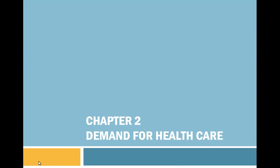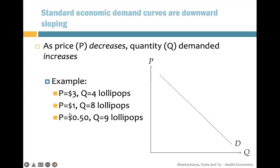We start this chapter with the standard economic demand curves. Usually they are downward sloping. The reason is that if price decreases, the quantity demanded should increase. If something is cheaper, you want more of it. If something is more expensive, then you want less of it.